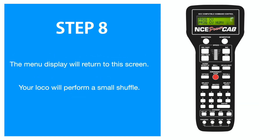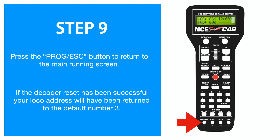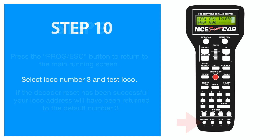Now the screen will return to the Program CV number screen. To exit, simply press the Program/Escape button and that will take you back to the main running screen. When you return to the main running screen you'll notice the last loco address is still displayed, so you will need to enter loco number three, because your decoder has been reset and will have returned to the default address of three.